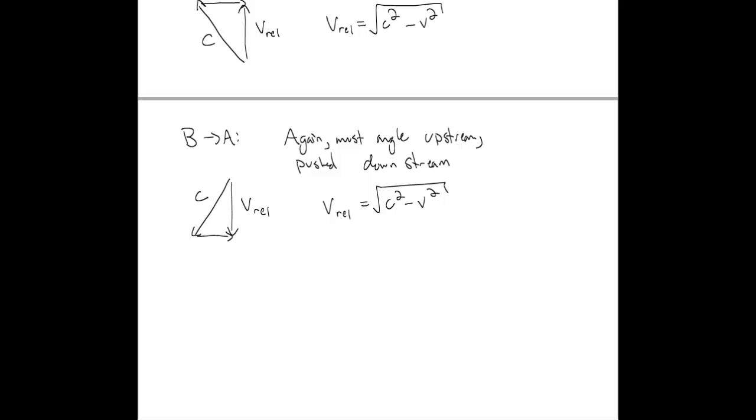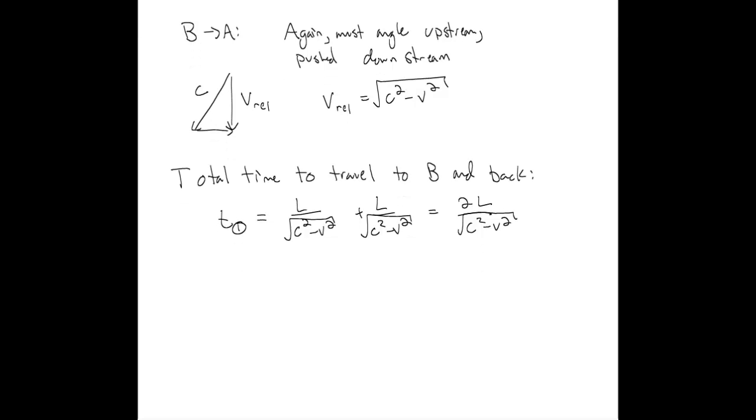So the relative speed in both cases is the same. Therefore, the total time that it takes to travel from B and back is given by the distance over the relative speed for each leg. With a little simplification, we can make this look a little bit nicer and a little bit closer to what we had from the previous case.